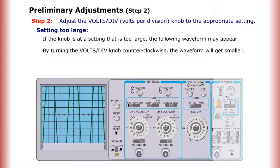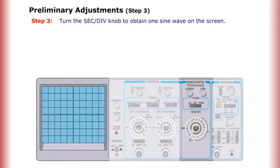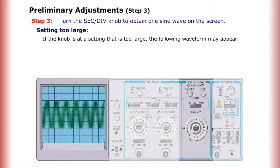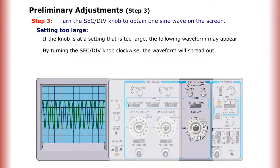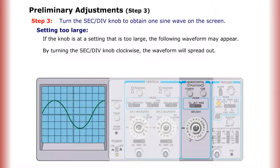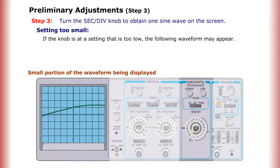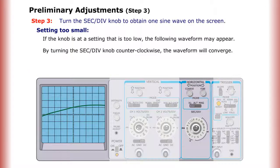By turning the volts per division knob counterclockwise, the waveform will get smaller. Turn the seconds per division knob to obtain one sine wave on the screen. If the knob is set too large, too many waves are displayed; turning the seconds per division knob clockwise will spread the waveform out. If the knob is set too small, only a small portion of the waveform is displayed; turning the seconds per division knob counterclockwise will cause the waveform to converge.